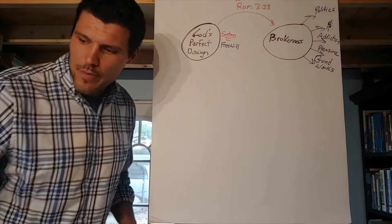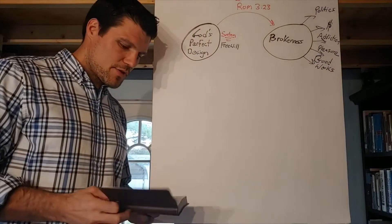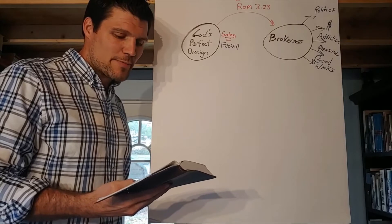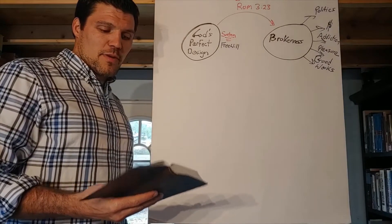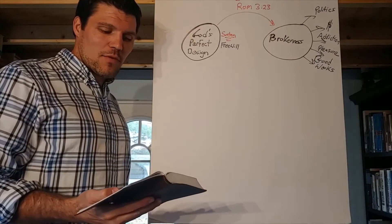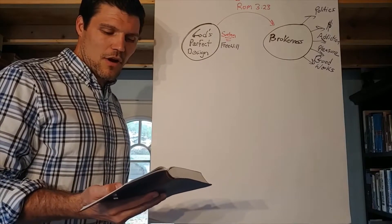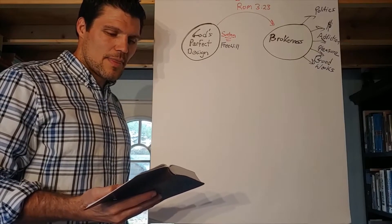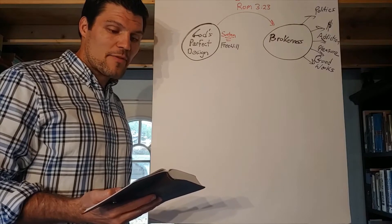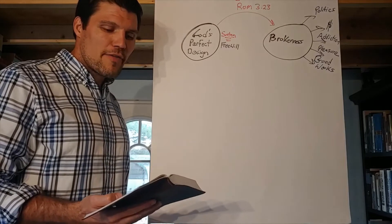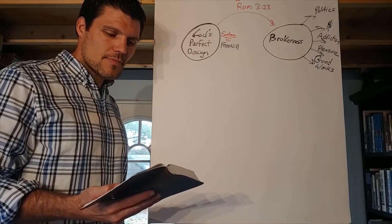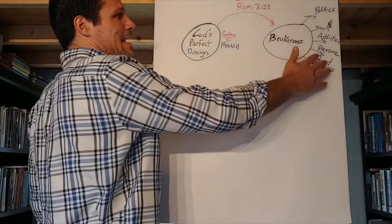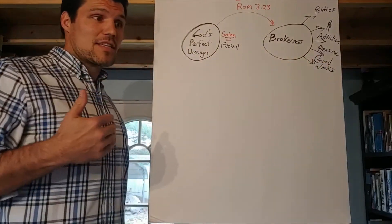Let me read Romans 3:23. It says, for all have sinned and fall short of the glory of God. But if you look at this chapter, a few verses before, it says no one is righteous, not even one. No one who understands, there's none who seek after God. All have turned away. There's no one that does good. Everyone practices deceit. They're swift to shed blood. The way of peace they do not know. They have no fear of God before their eyes. And it says no one will be declared righteous by works of the law. No one's going to be declared righteous by any attempt that they can to fix the situation or to fix themselves.